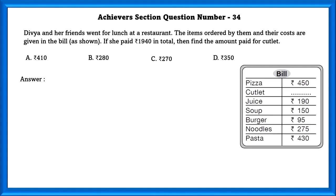Achievers Section Question Number 34. Divya and her friends went for lunch at a restaurant. The items ordered by them and their costs are given in the bill as shown. If she paid 1940 in total, then find the amount paid for the cutlet.